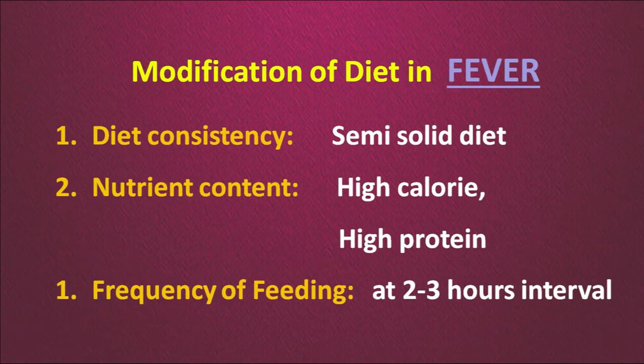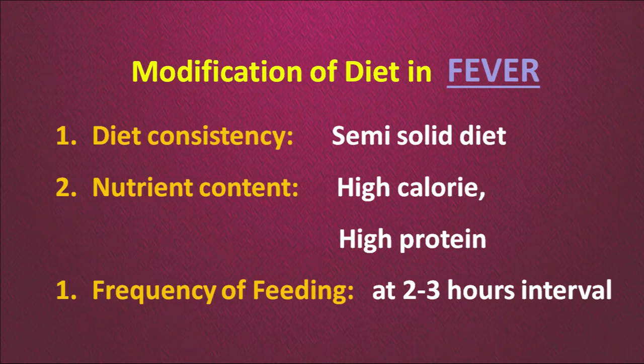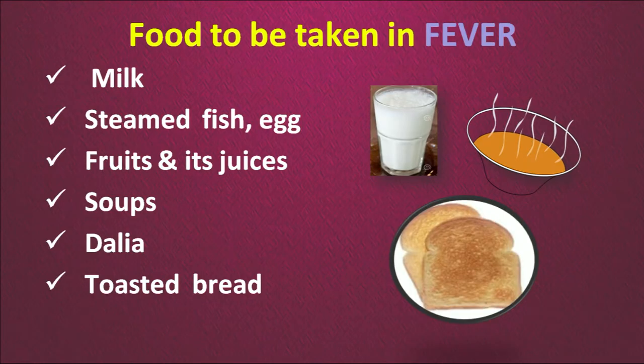Now we will talk about diet modification in case of fever. The diet consistency should be semi-solid. Fever requires high calorie and high protein because during fever there is an internal high demand for energy and a lot of tissue breakdown, so high protein is also required. The frequency of feeding can be every two to three hours in small quantities. Foods that can be given in case of fever: milk, steamed fish, egg, fruits and fruit juices (not chilled), hot soups, dalia, and toasted bread.